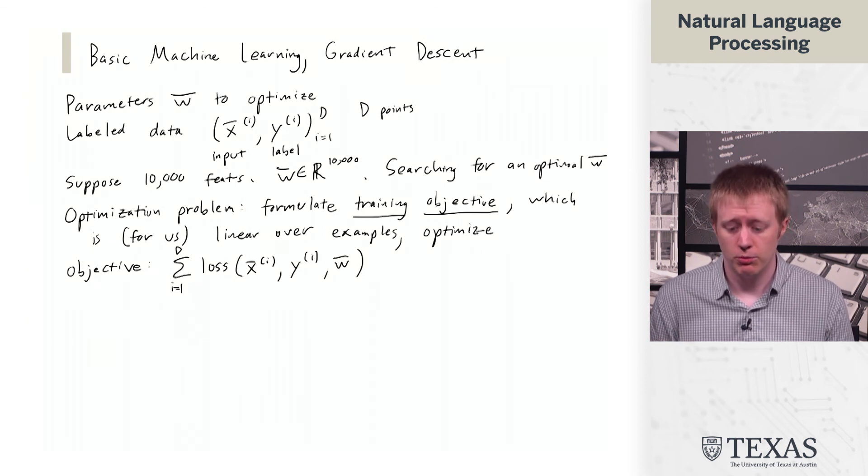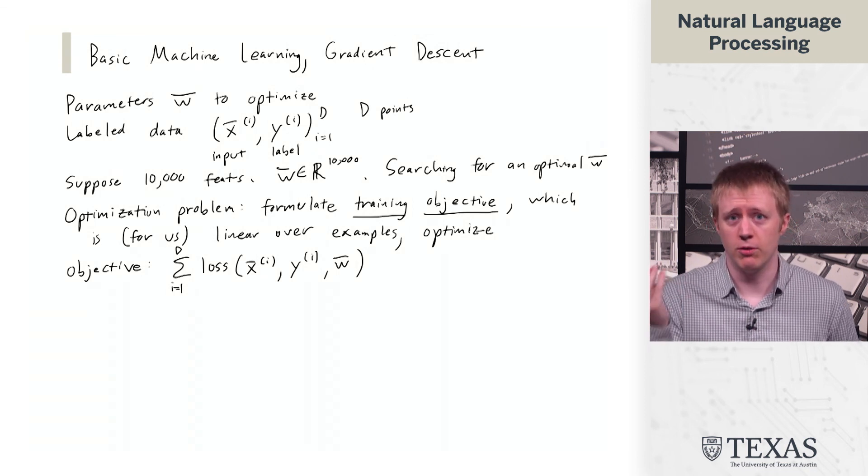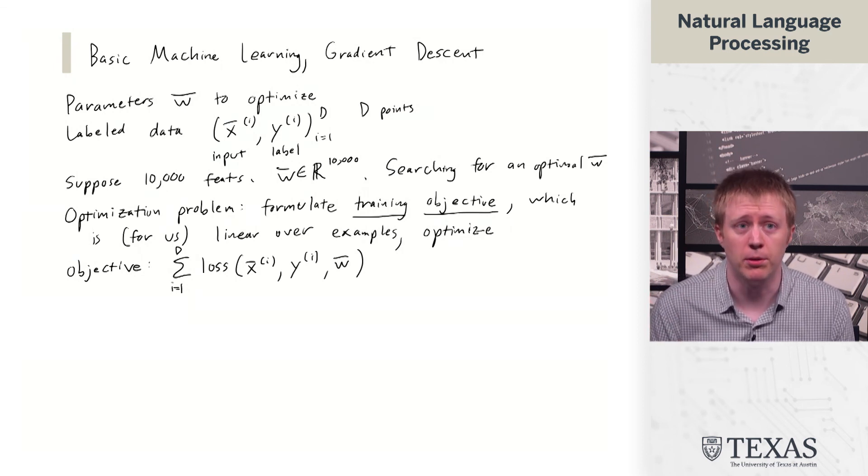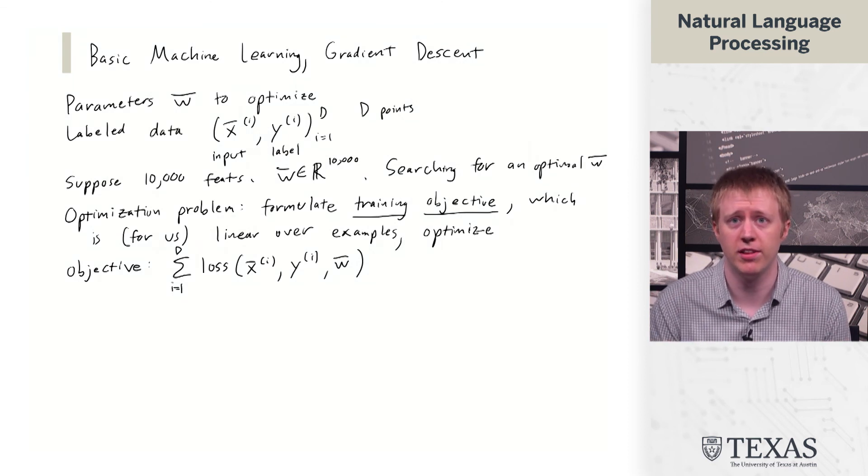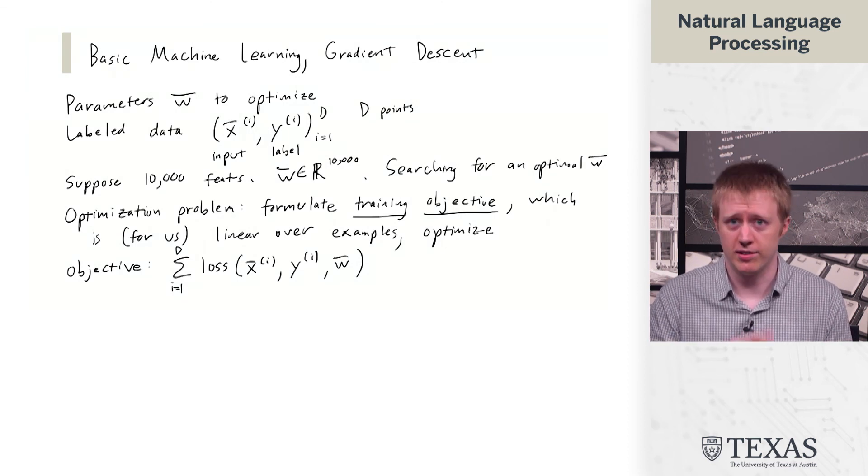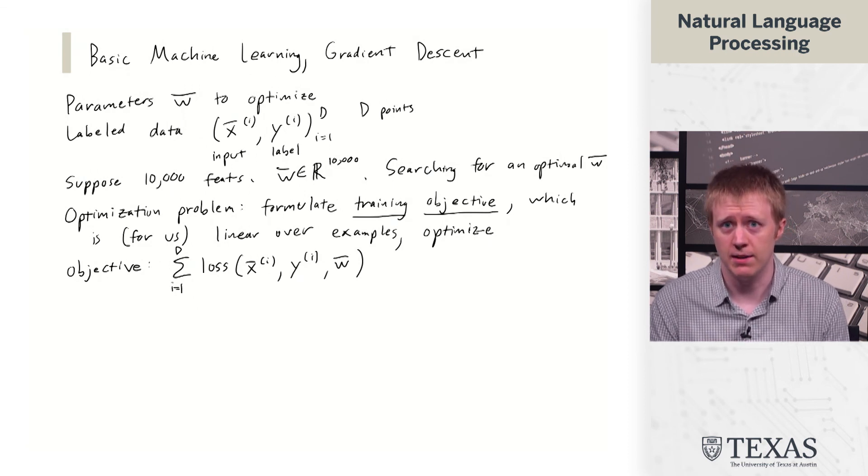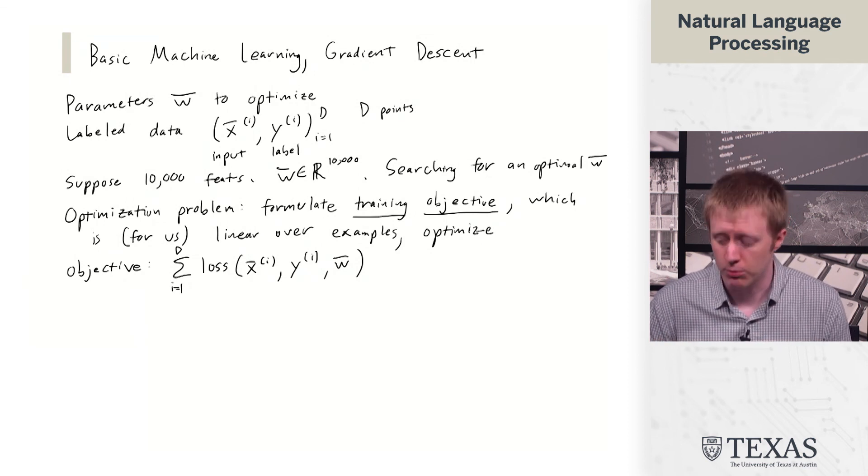And so roughly, the way you could think of this is, for these current weights, how well is it doing at fitting this particular example? And by summing up those losses over the training data, we get an overall sense of how well does this current weight vector W fit the training data. And what we want to do is we want to find a W that fits this training data very well.